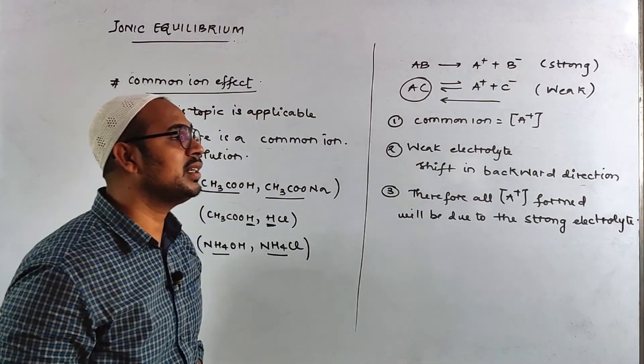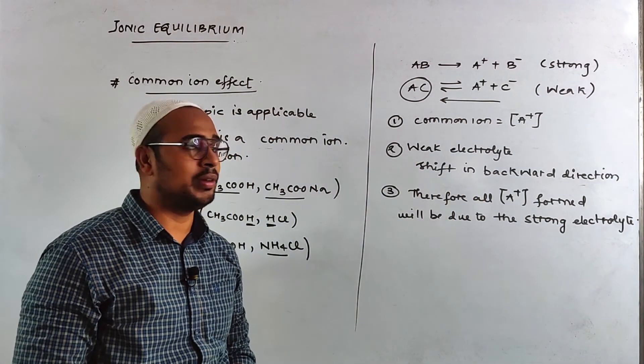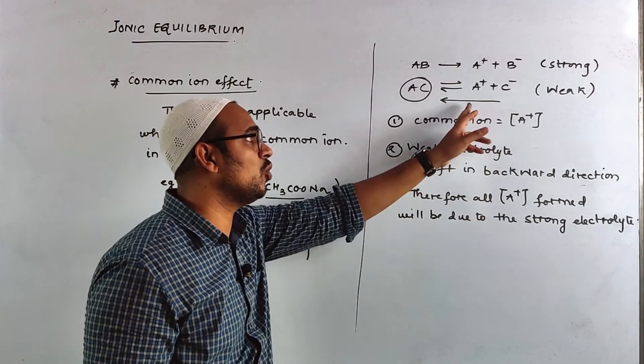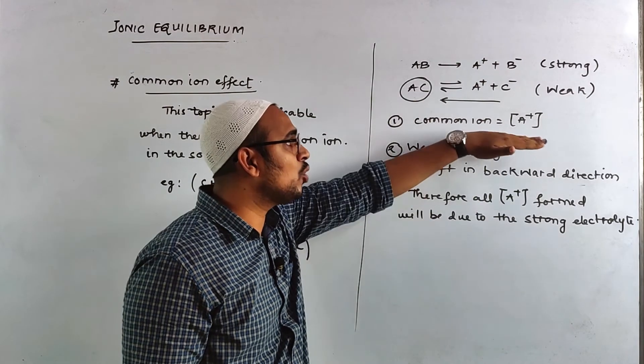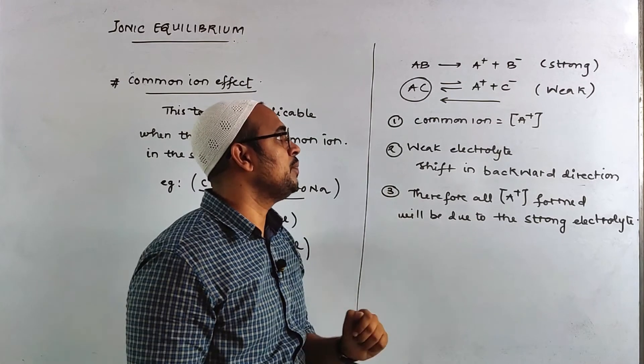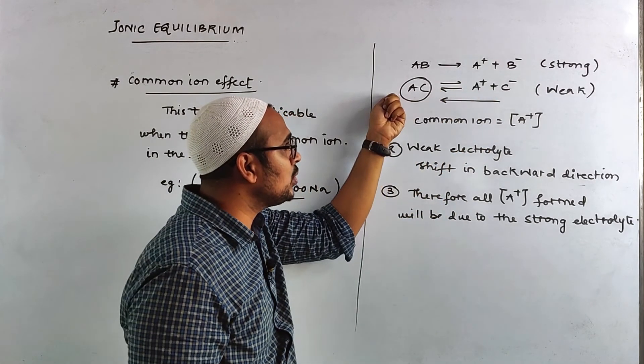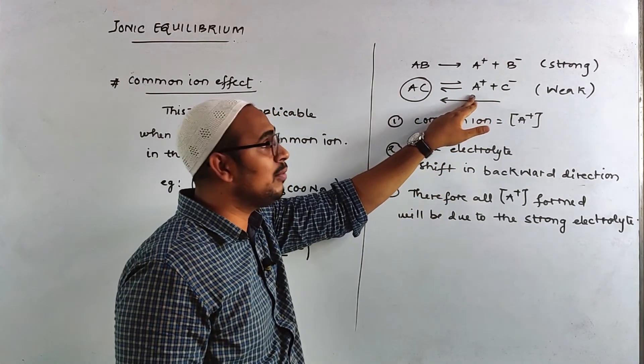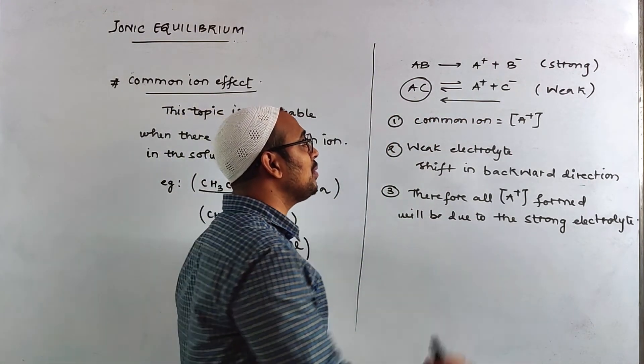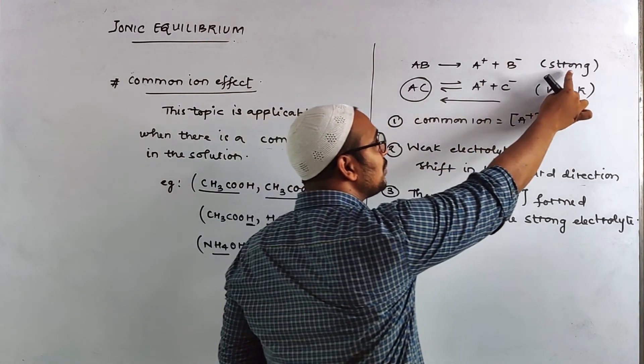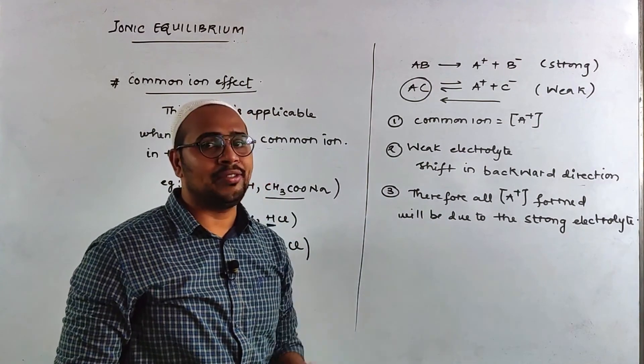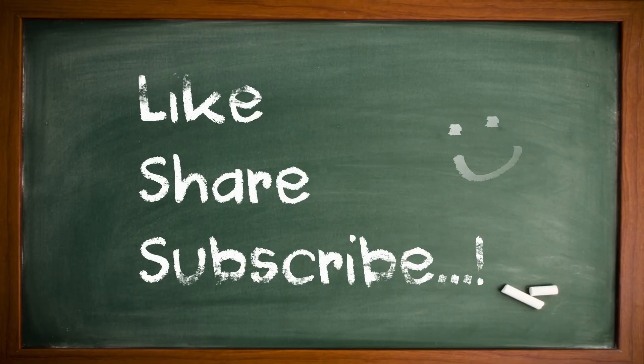Just simple concept is what is common ion effect. First you have to understand that a solution will be like this: if an ion is common then the weak electrolyte will shift in the backward direction. If it is backward direction then which will be A plus, then what will be done. And just the solution which will be A plus that will be because of the strong electrolyte. It will make you use common ion effect. This needs to be understood.